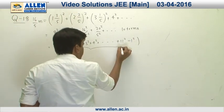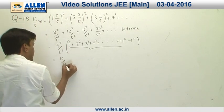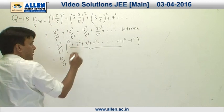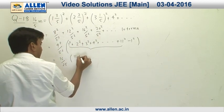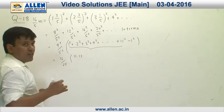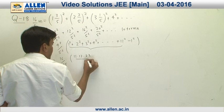This can be written as the entire sum. This is 16 upon 25. The total number of terms is 11, so this is n into n plus 1 into 2n plus 1, that is going to be 23 upon 6 minus 1.